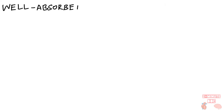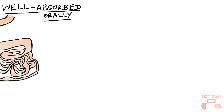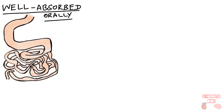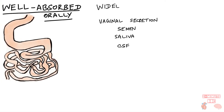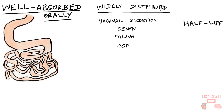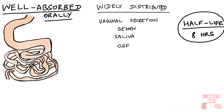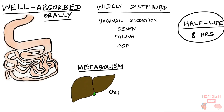Pharmacokinetics: Metronidazole is well absorbed orally and is almost completely absorbed from the small intestines. It is present in therapeutic concentrations in vaginal secretion, semen, saliva, and cerebrospinal fluid, so it is widely distributed. The half-life in the body is about eight hours. It is metabolized by the liver through oxidation and conjugation, and is excreted by the kidneys.